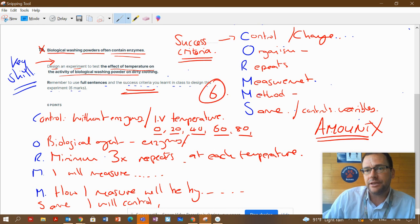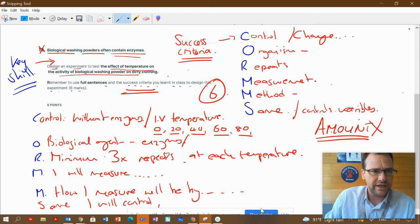So really important that you use that success criteria. That's going to help you get six out of six for this question. Stop the video, rewrite yours, get six marks out of six using the video.